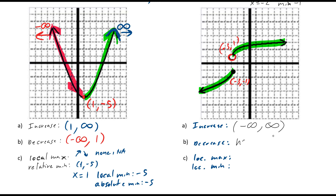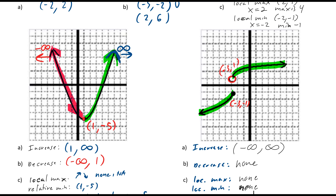Decreasing — there's none. And if there's no decrease, that means we're not going to have any maxes or mins. So yes, that was a very long explanation video, but thank you for listening.